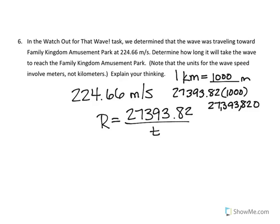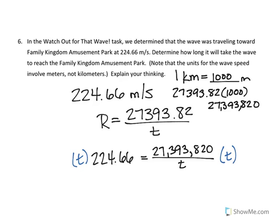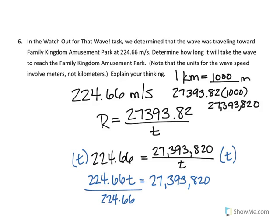Now we have a rate of 224.66 equals 27,393,820 divided by our time. To solve this, we're going to multiply by time, which would give us 224.66t equals 27,393,820. Then we will divide by 224.66. Now when you do this, you're going to get a time of 121,934.6 seconds.